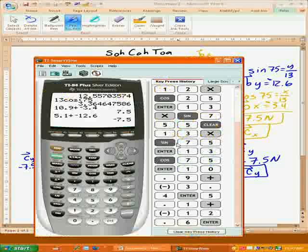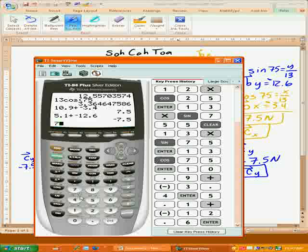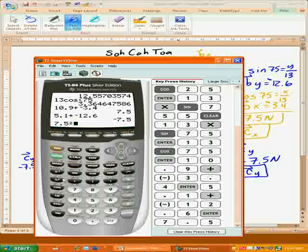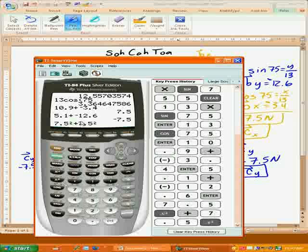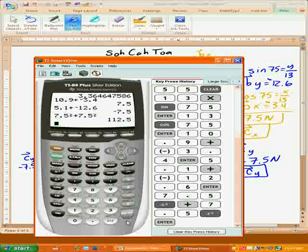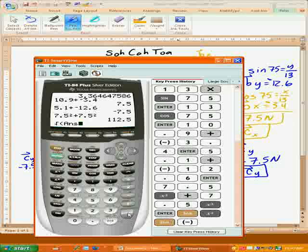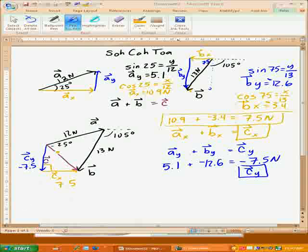So it'll be 7.5 squared plus 7.5 squared. Now obviously one of those was negative, but when you square it, it doesn't matter. And then we need to square root that because it's equal to C squared, and so we get 10.6. That's the magnitude.